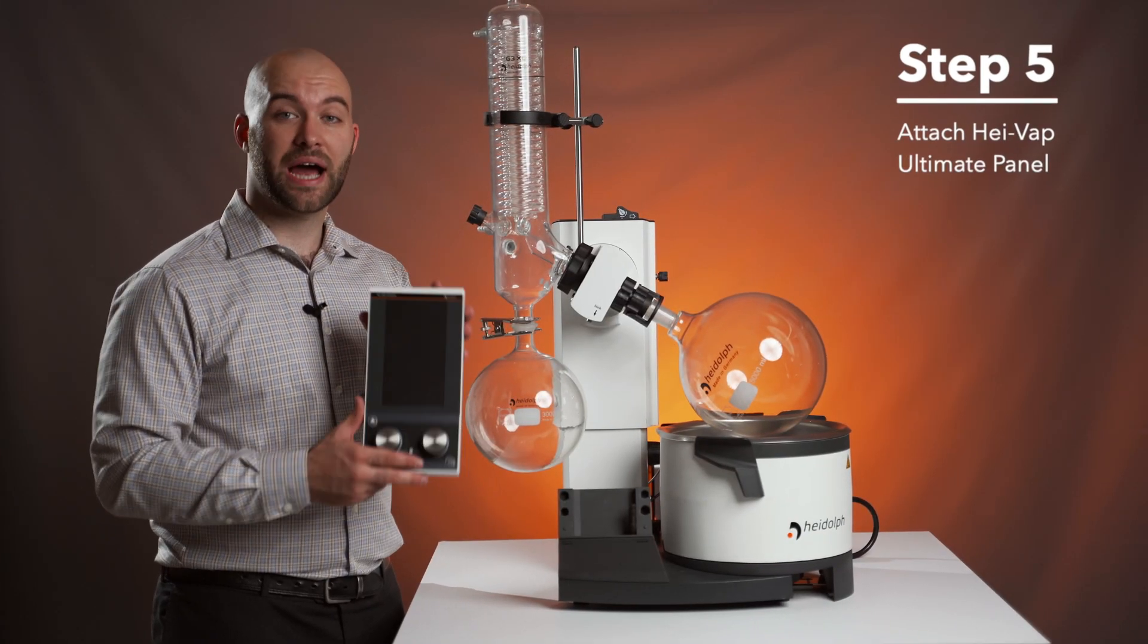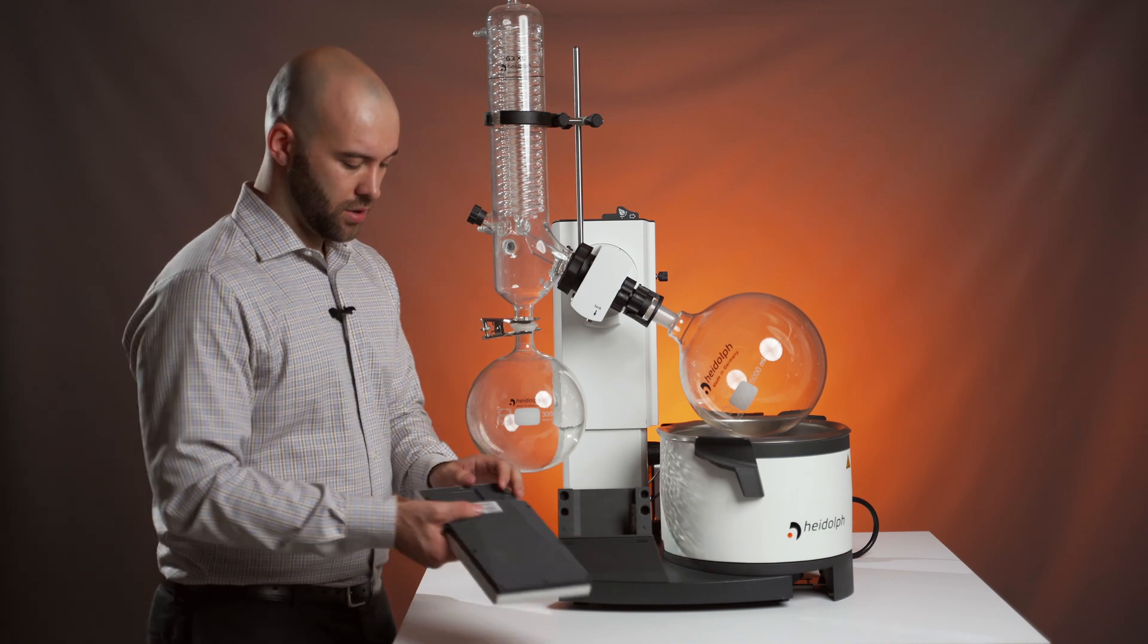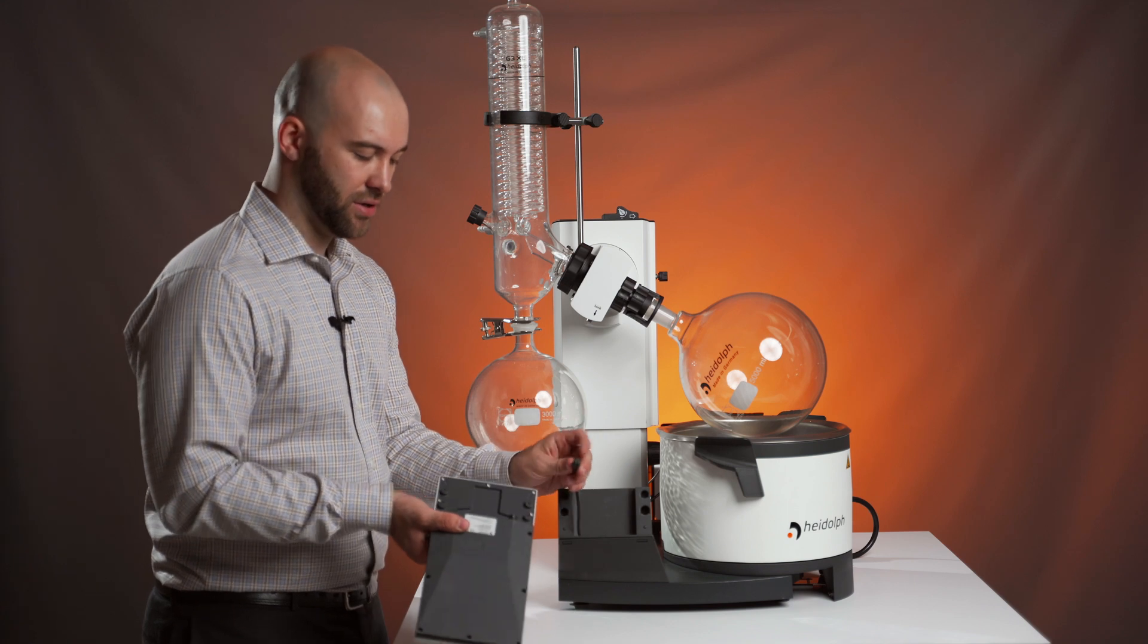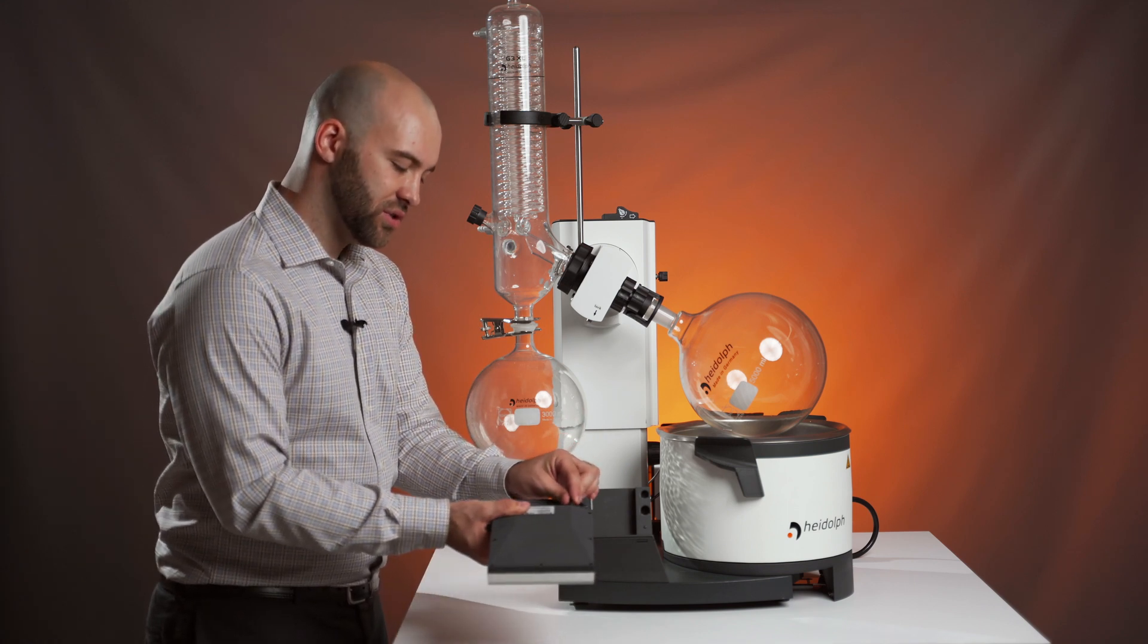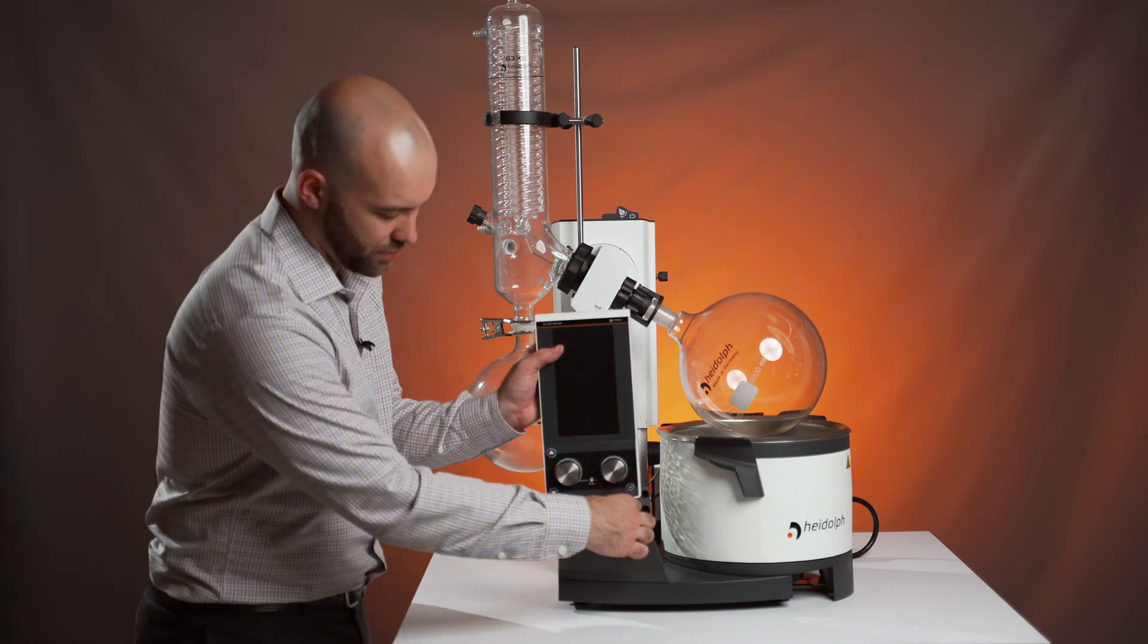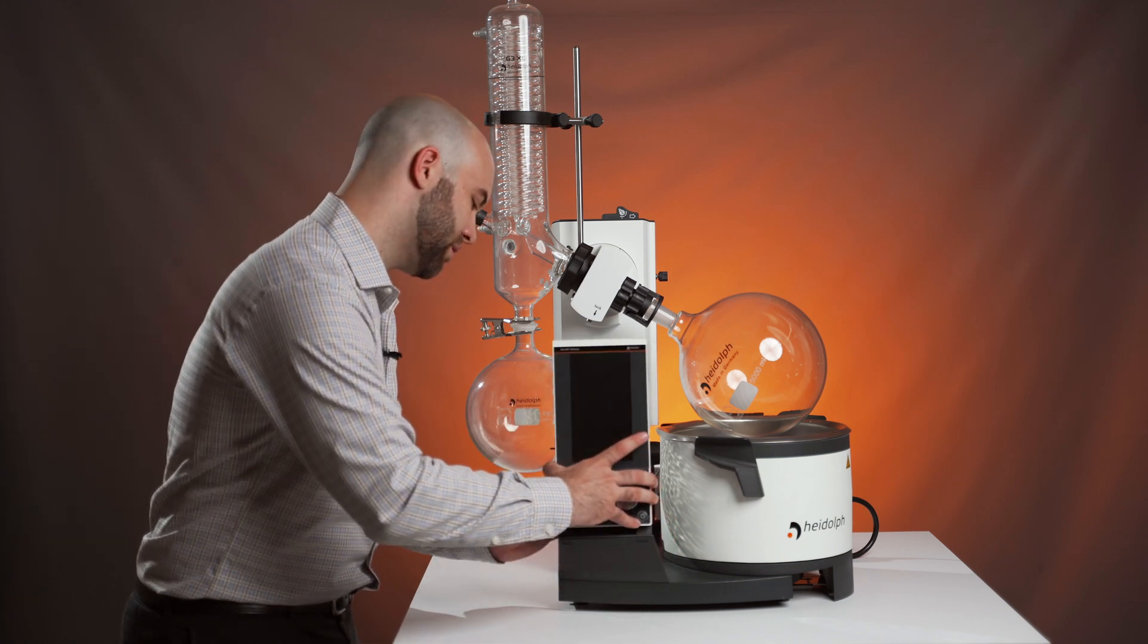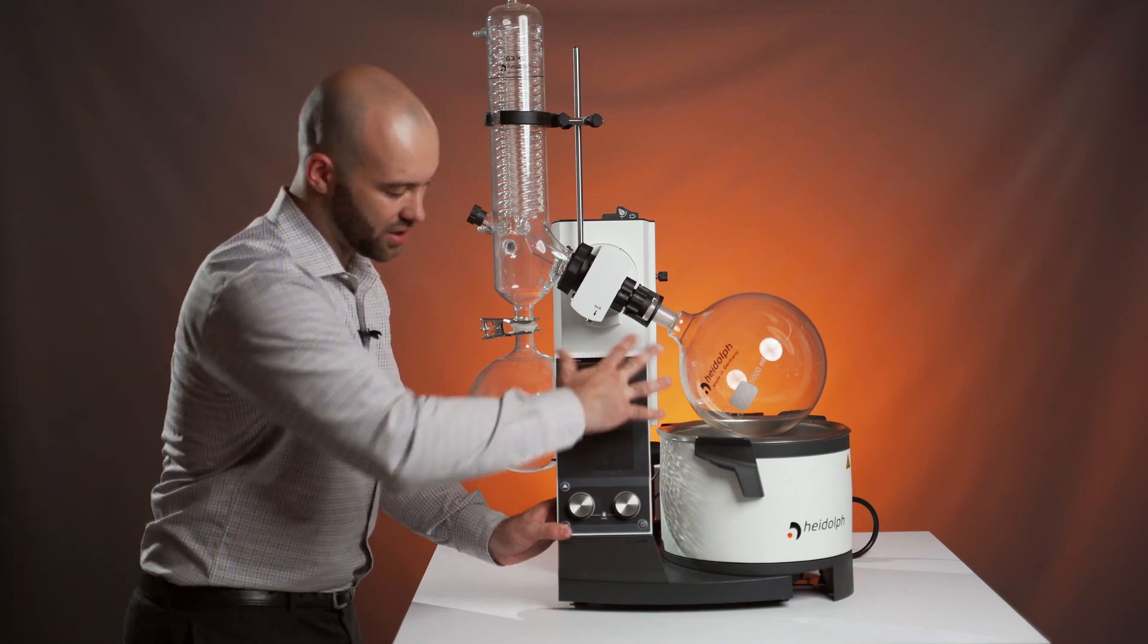Step five, we're going to attach our HiVap Ultimate panel to our HiVap. You're going to see a white notch on the back of the panel, and the white notch on the cable on your HiVap. They're going to slot into each other to connect, and you're going to slide this cable back down through the hole, line up the four slots, and push down until you hear a click.